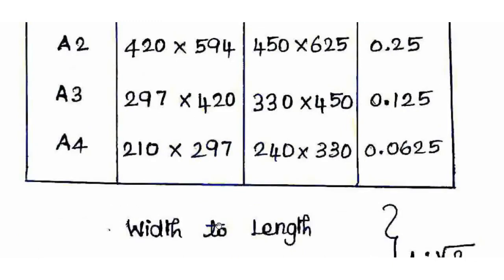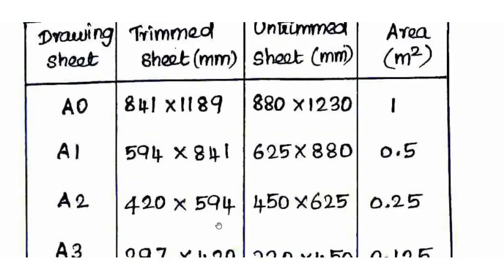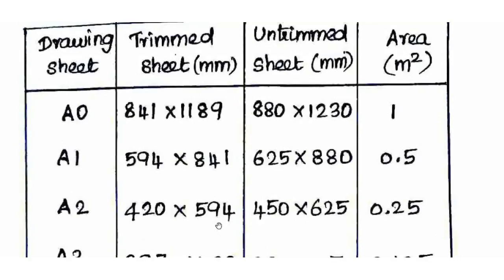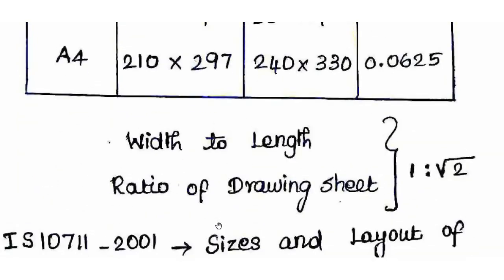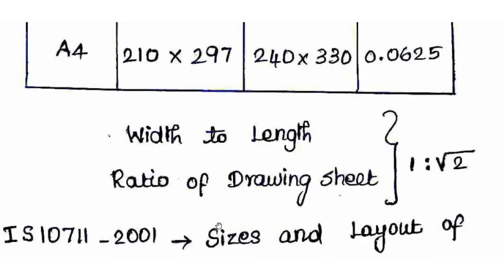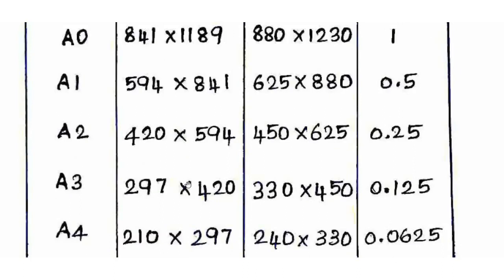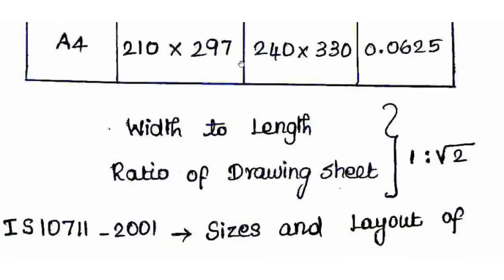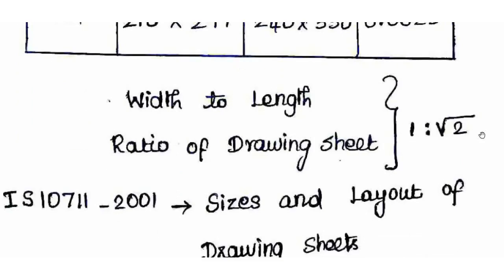An important objective in the exam is the width-to-length ratio of the drawing sheet. The width is 841 mm and length is 1189 mm, so the ratio is 841 divided by 1189 equals 0.707. This gives a width-to-length ratio of 1 : √2, since 1 divided by 1.414 equals 0.707. Conversely, the length-to-width ratio is √2 : 1.